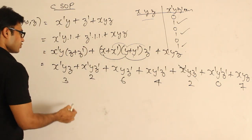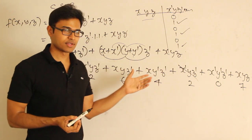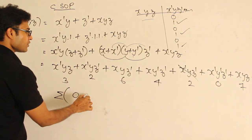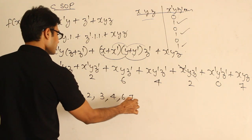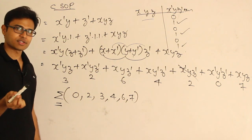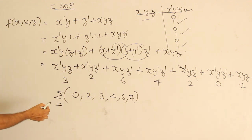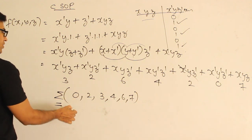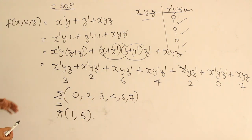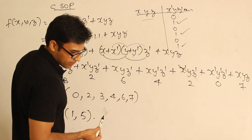Since minterm 2 repeats, we only need it once. The final canonical sum of products in ascending order is sigma(0, 2, 3, 4, 6, 7). And the canonical product of sums uses the remaining values where the function is 0: pi(1, 5). Please cross-check — yes, that is correct.